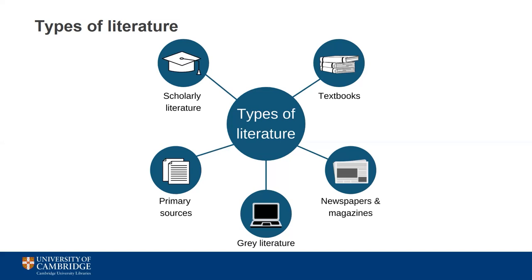The term grey literature also covers dissertations and theses produced by students. At Cambridge, these are deposited into the university repository Apollo, which is publicly accessible. These theses contain a wealth of research and are an excellent place to read about new approaches and see what your contemporaries are saying. The final resource to mention is primary sources, which provide a direct first-hand account from people who were there at the time. The university has a large range of archives and digitized primary resources like historical research notebooks and diaries, available via the Cambridge Digital Library, which like Apollo is freely accessible to all online.